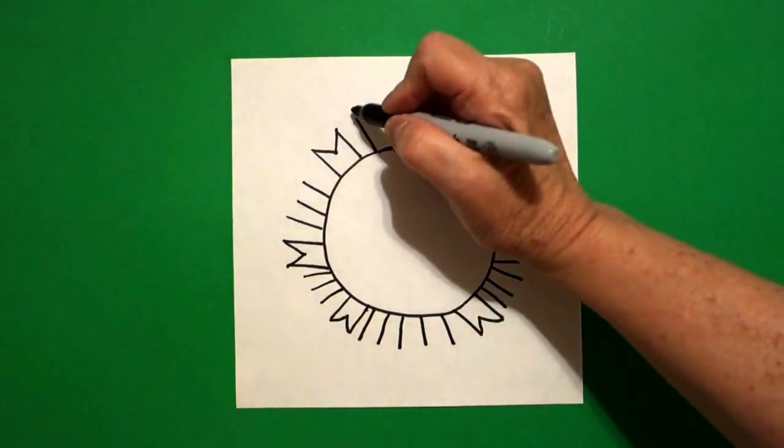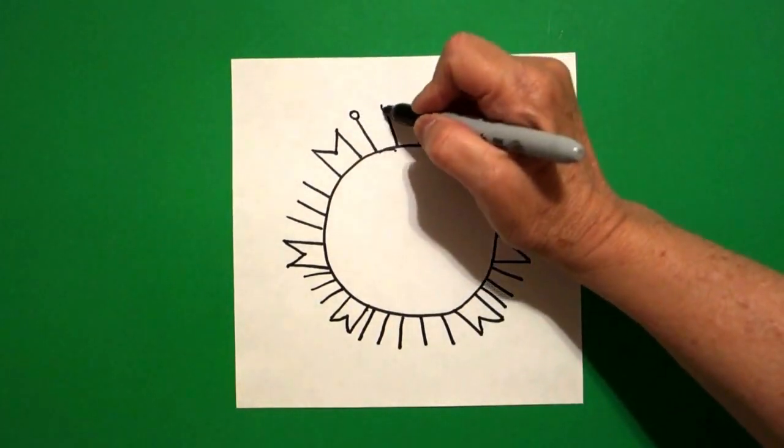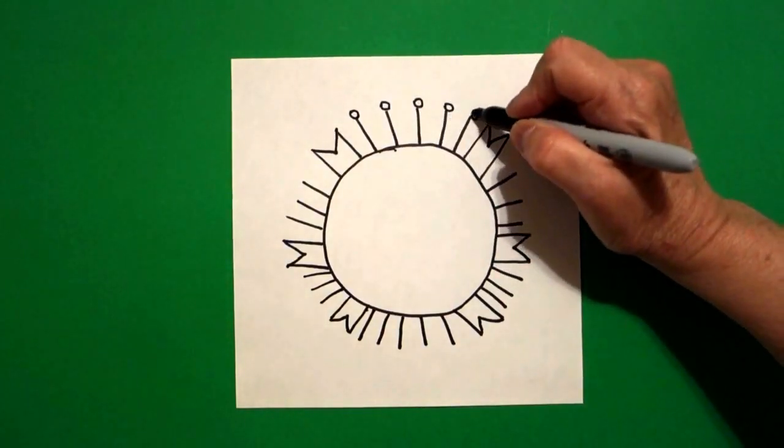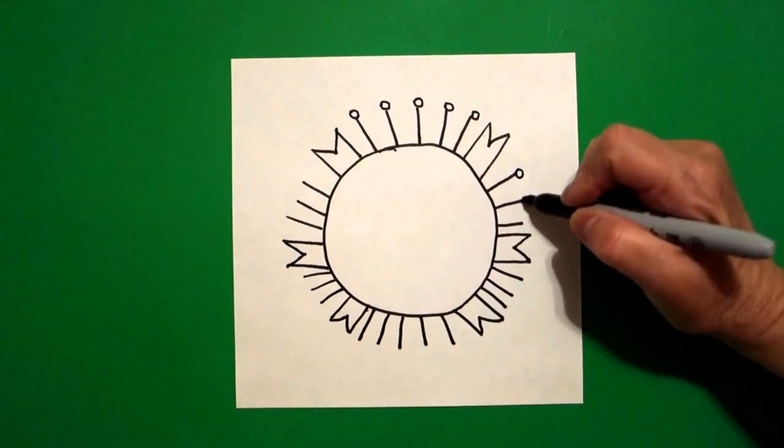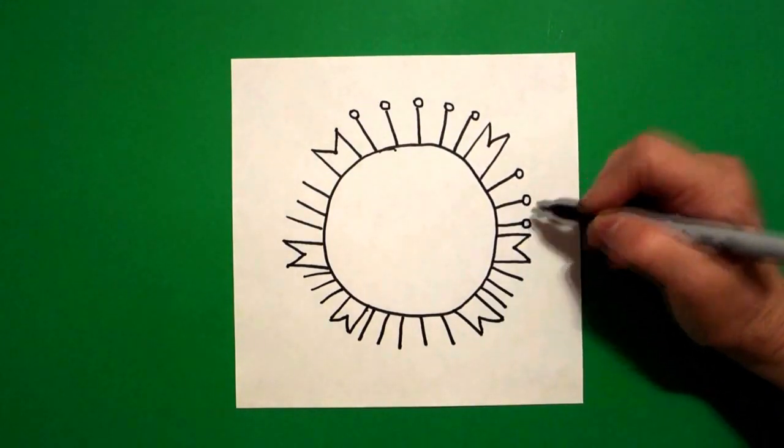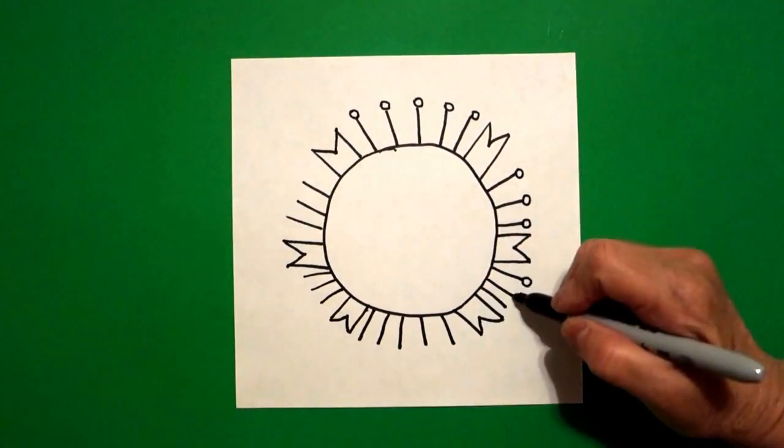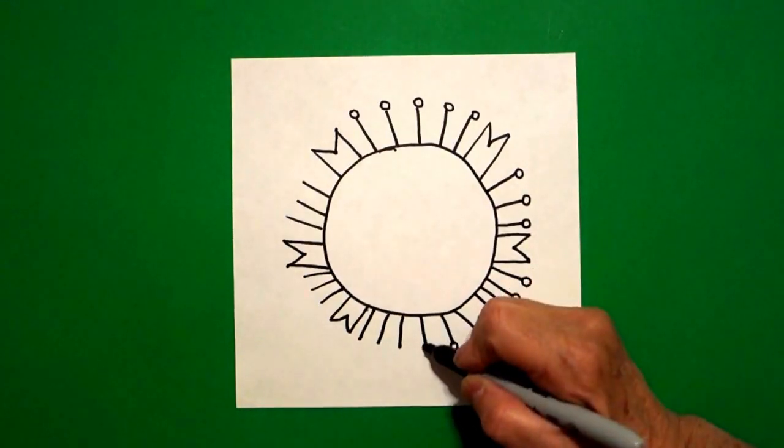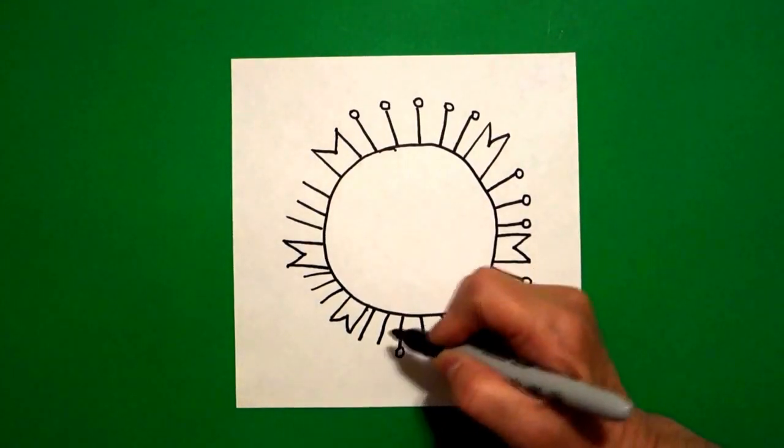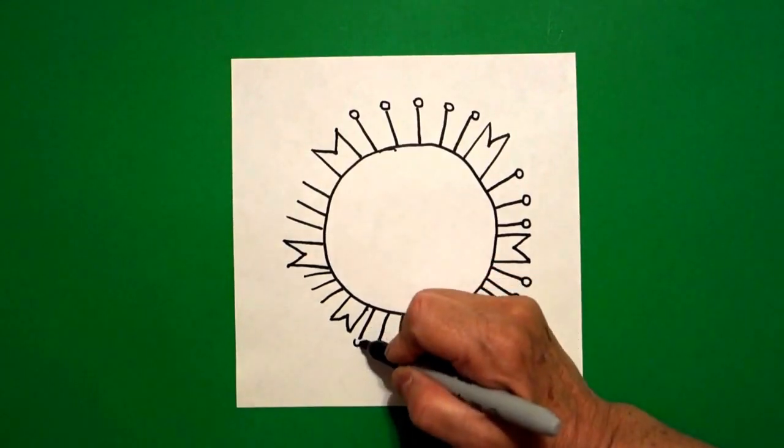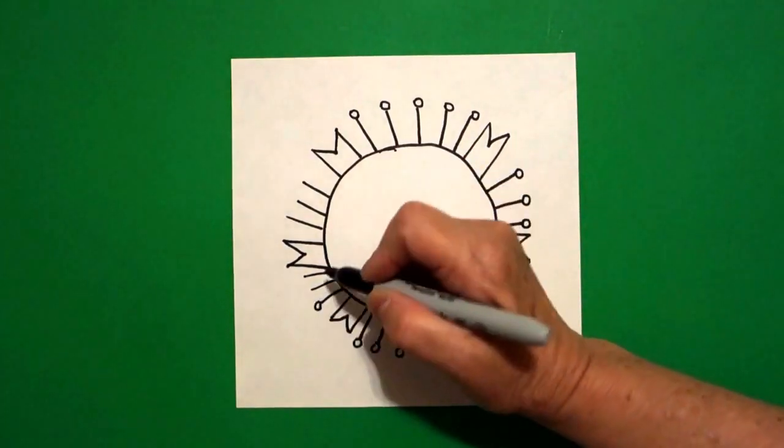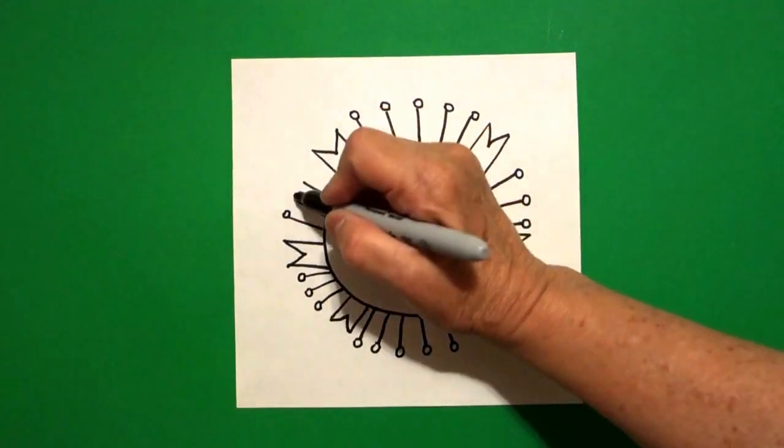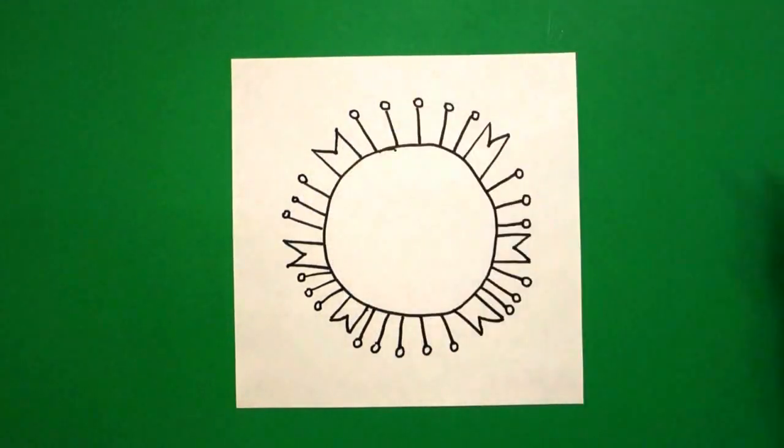At the end of each one of the straight lines I'm going to draw a baby circle. Now some of you might have room for more lines, just draw more. Some of you might not have as much room, just draw less. The main thing is that you want to make sure you have an even amount on the top and bottom and an even amount on the right and left sides.